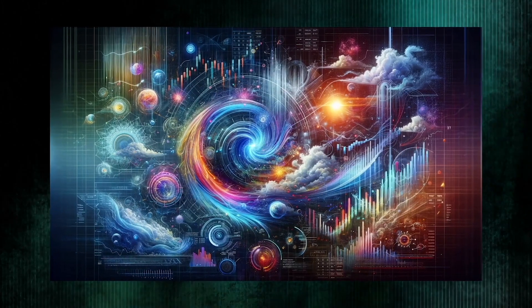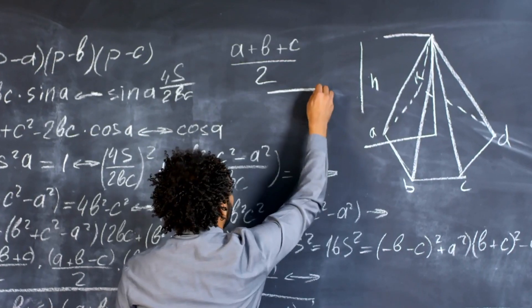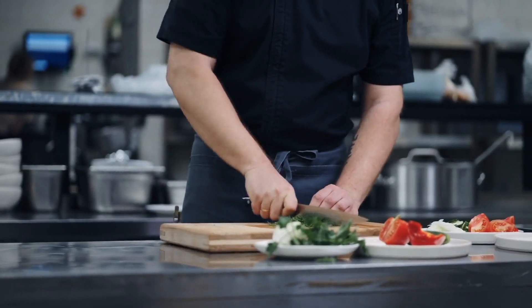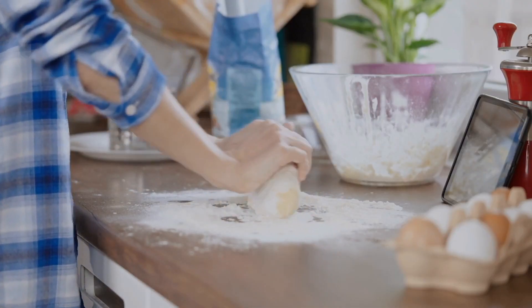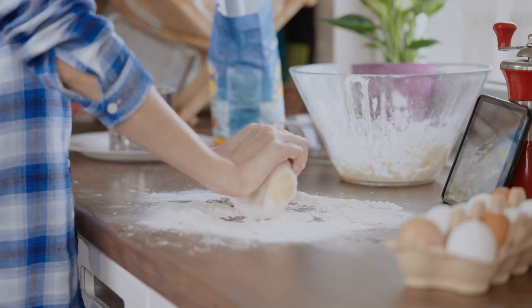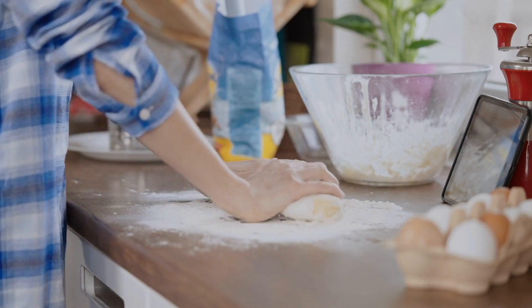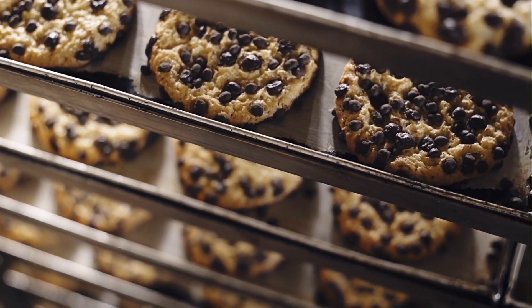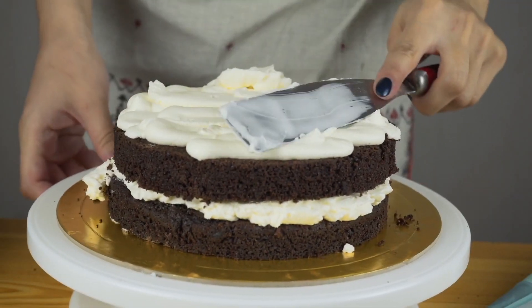This idea is important in math. When we make models of things like weather or the stock market, we have to start with some initial conditions — like the starting ingredients in a recipe. But chaos theory tells us that even if we have almost the same starting ingredients, the outcome can be totally different. It's like trying to bake cookies, but because you measured the ingredients slightly differently, you end up with cake instead.